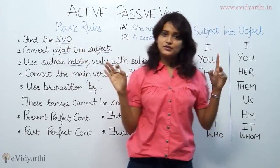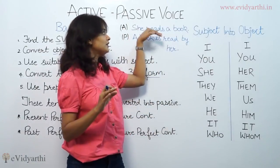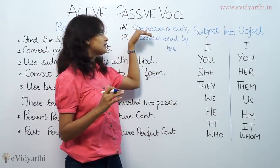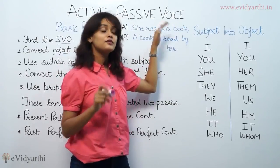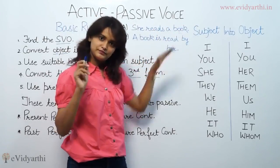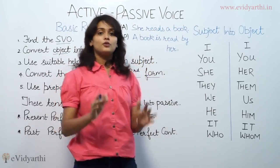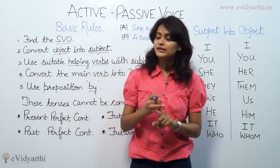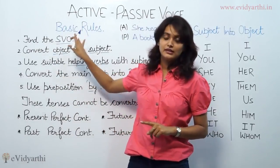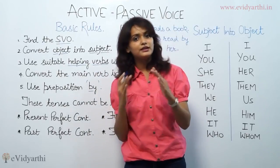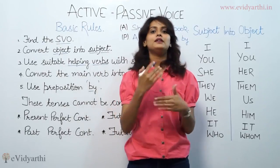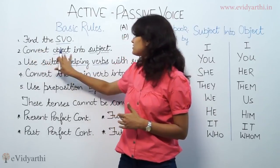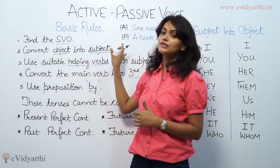Here I have mentioned a sentence. You can see: 'She reads a book.' This is an active voice sentence. The tense is simple present tense. In our sentence, the first step is to identify these three things — subject, verb, and object. When we identify these three things, then we go to the next step: convert the object into subject.